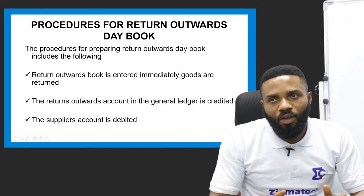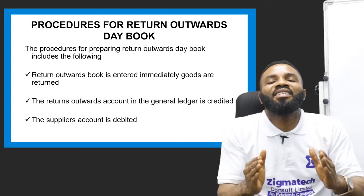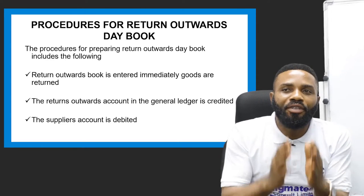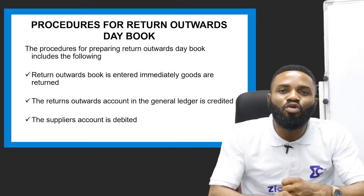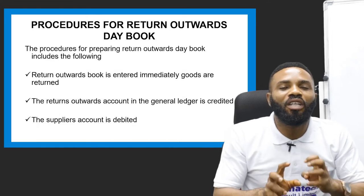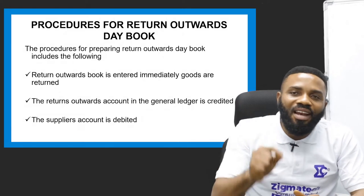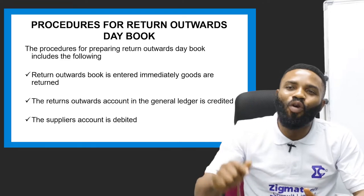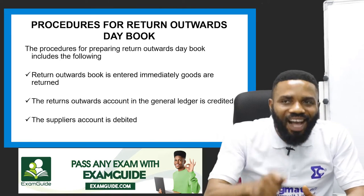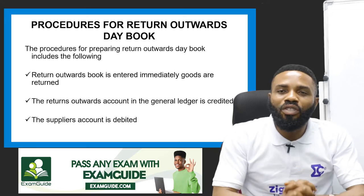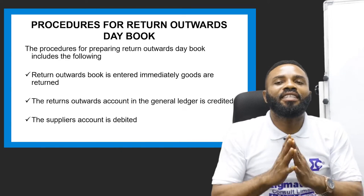Now let's look at the procedures for the returns outwards day book. What are the things you must observe? Number one: you must understand that the returns outwards book is entered immediately when goods are returned. It does not need to wait — whether daily, weekly, or monthly. Immediately the item or group of items are returned to the supplier, it must be recorded in the book.